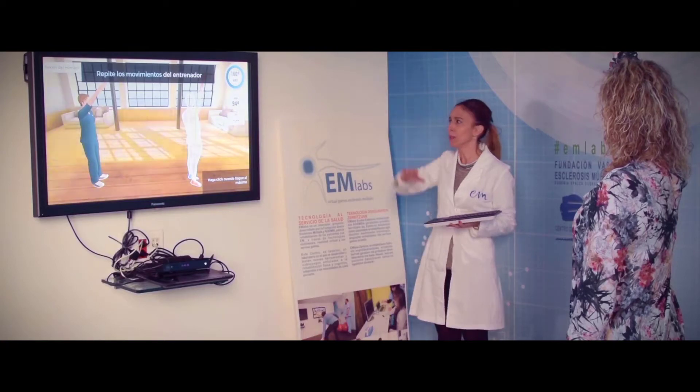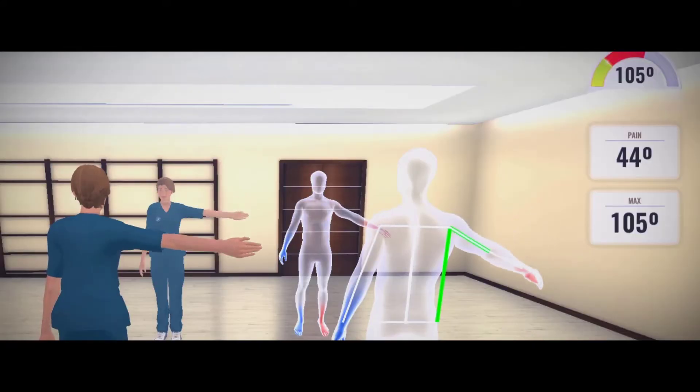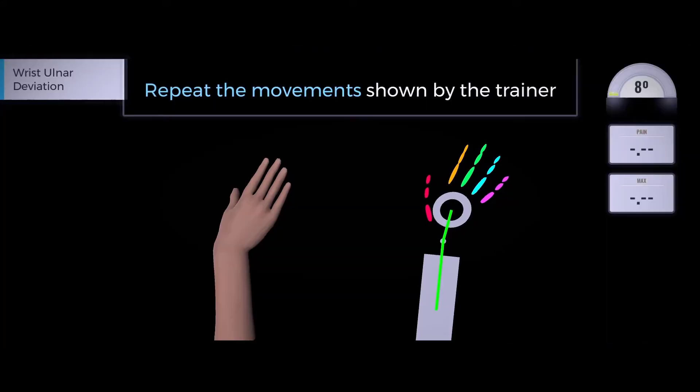Virtual Rehab includes an assessment module for measuring range of motion of upper and lower limbs as well as hands, allowing therapists to measure and record patient outcomes over time that can later be used for reimbursement purposes.